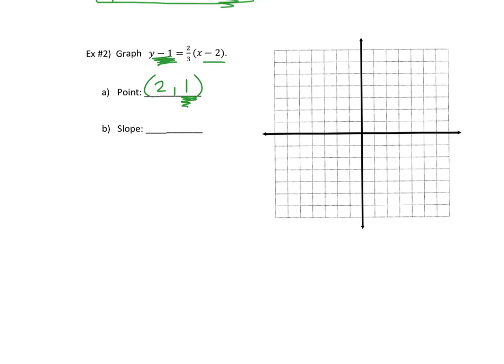The slope of this one is two-thirds. When they say to graph this, you have a point and you have a slope — plot the point first, then move from that point by the amount of the slope.